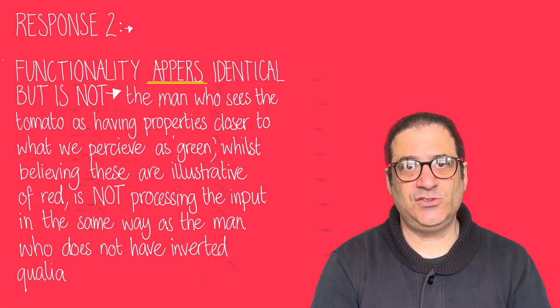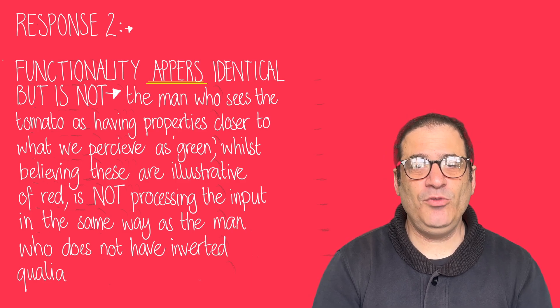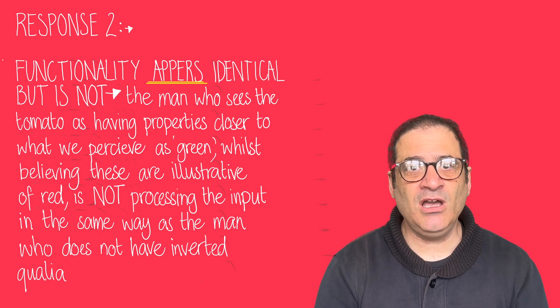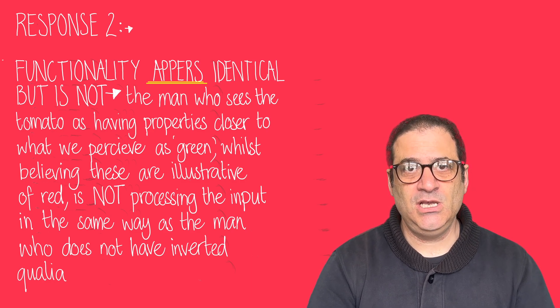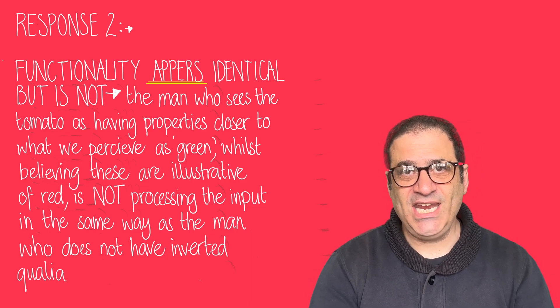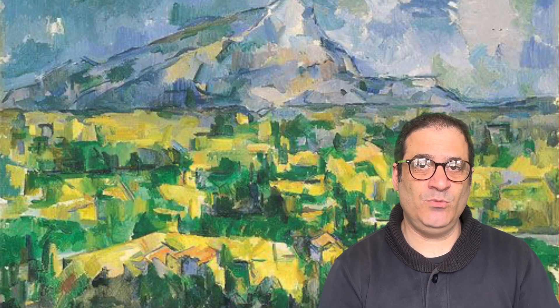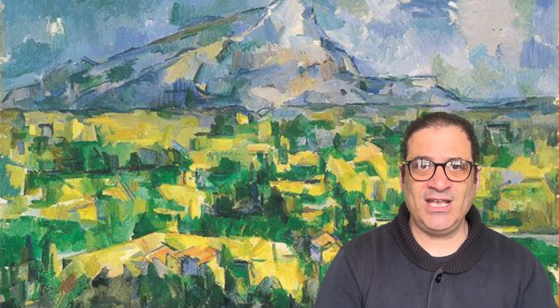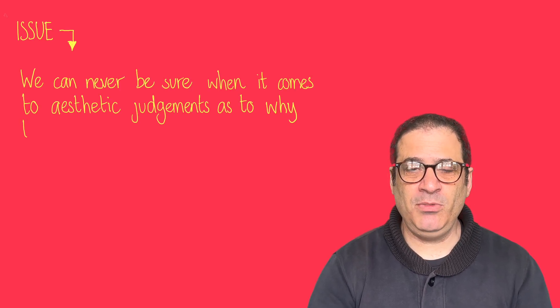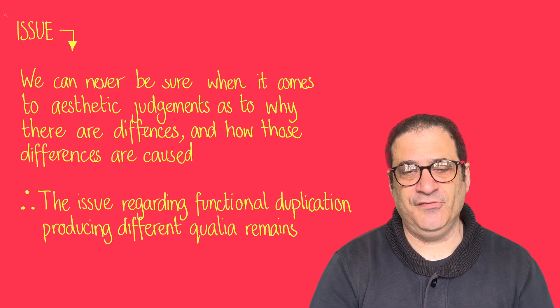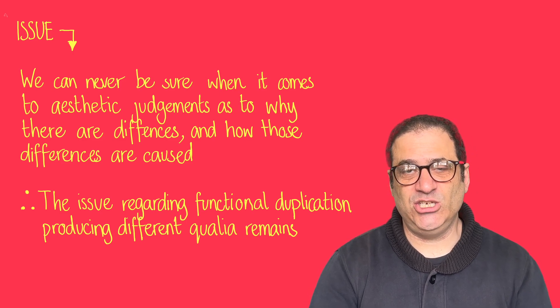The second argument that functionalists try, which is probably a little bit better, says that although on the surface it appears there's functional duplication between these two people, if we dug a bit deeper and looked at their behavior, we'd realize there wasn't. For example, if someone was looking at a painting with lots of green in it, they will like it, whilst the person who sees red when we see green will not like the painting because it will look more aggressive and less pleasant. So functionalists argue you'd actually see non-duplication — these people would respond differently to the paintings. However, when it comes to aesthetic judgments, we can never be sure exactly what caused those differences, and the question remains wide open.